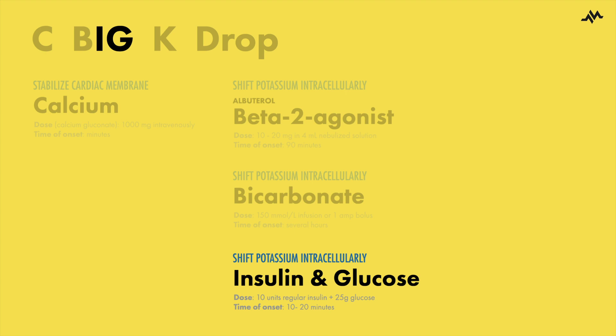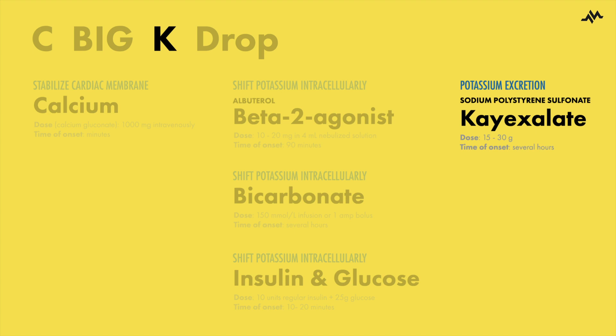Glucose, or dextrose, is typically given alongside insulin to prevent hypoglycemia. K stands for K-exalate, which is the brand name for sodium polystyrene sulfonate, a gastrointestinal cation exchanger which lowers potassium levels by binding to it in the gastrointestinal tract in exchange for another cation such as sodium or calcium, and then subsequently removed from the body in the stool, a process that could take several hours to have any effect.